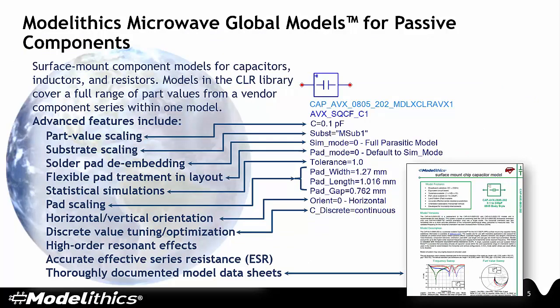Getting back to the Complete Library, we'll discuss ModelLythics' Microwave Global Models. These are models for surface mount capacitors, inductors, and resistors where a single model covers the full range of part values for a vendor component series. In addition to being part value scalable, Microwave Global Models scale with respect to substrates and solder pads, providing designers with great flexibility. They allow for statistical simulations, discrete part value optimizations, and more.